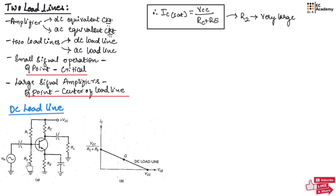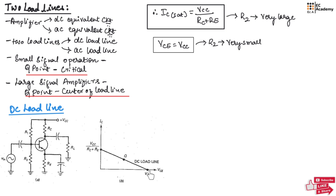When the resistor value R2 is very small, it will drive the transistor into the cutoff region and we obtain VCE = VCC. This is obtained for R2 very small. This point represents VCE = VCC for R2 very small. If we join these two points, the line we obtain is called the DC load line. When the Q point is at the center of this load line, the transistor will be operating in the active region.